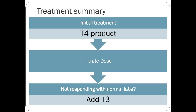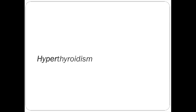The treatment summary is straightforward: start T4, titrate the dose, and if labs are good but the patient still isn't responding, add some T3. That's really all there is to it. As for stopping the medication — likely not possible long-term. Hypothyroidism is a permanent, lifelong condition; spontaneous recovery is essentially unheard of, and quality of life without replacement would be poor.